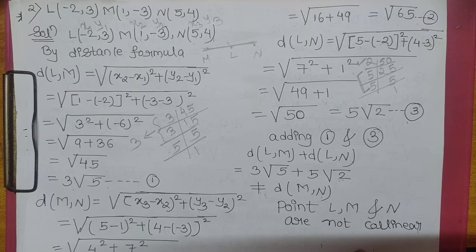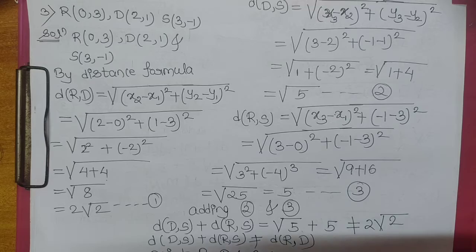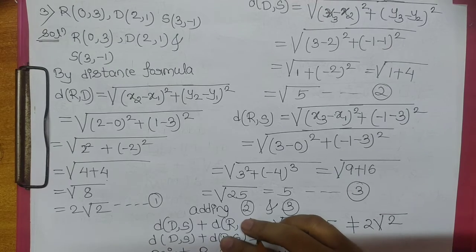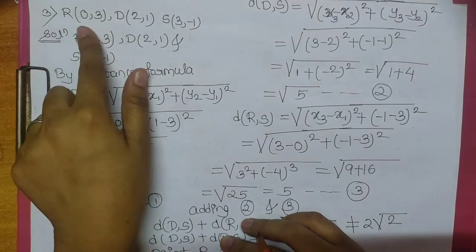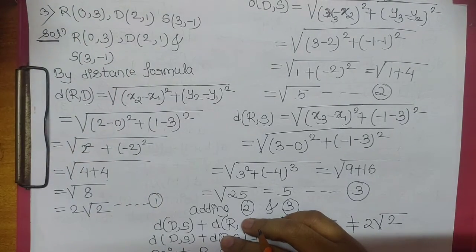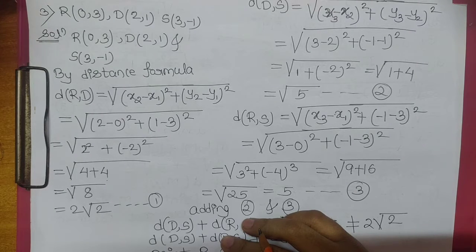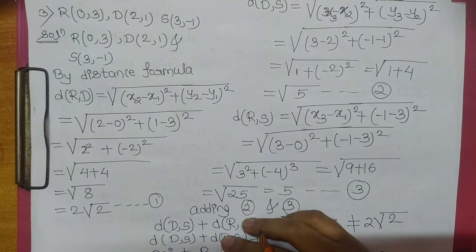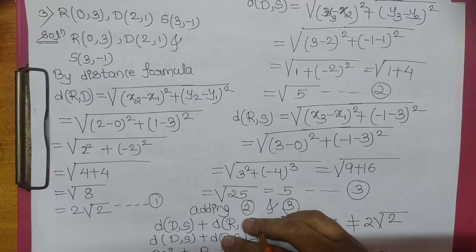Next question — question number 3. R is (0, 3), D is (2, 1), and S is (3, minus 1). You have to check whether these 3 points are collinear or not.